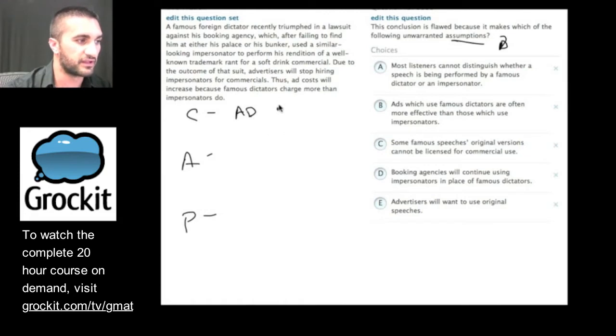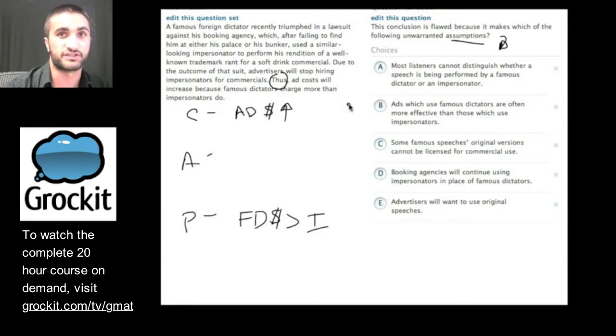So for a conclusion, we should have something along the lines of ad costs will increase, ad costs will go up because the reason given is that famous dictators charge more. Famous dictators charge more than impersonators do. So again, we're just breaking down the paragraph on our own, on our scratch pad, on the GMAT. And let's take a look at these answer choices. We need to find the answer choice that must be true for this argument to make sense. Remember last week we said watch out for language. So here's this word most listeners. So whatever the logic of this answer choice is, it must be true that most, not some, not half, not less than half, but most, which is more than half. So let's read. Most listeners cannot distinguish whether a speech is being performed by a famous dictator or an impersonator. Must this be true for the argument to make sense? I don't think so. I don't know why this would have to be true that most listeners cannot distinguish for the argument to make sense. So we can get rid of that one.